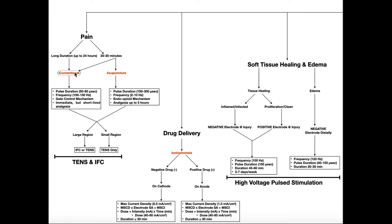Conventional treatment doesn't have really any analgesia after the treatment is complete, but you do have it during the treatment. So conventional might be something you'd want to do if you wanted pain reduction while a treatment is going on. For conventional TENS or IFC, you set the pulse duration between 50 and 80 microseconds and the frequency between 100 and 150 hertz. Acupuncture gives you analgesia after the fact, but conventional does not — it will give you pain reduction during the treatment.